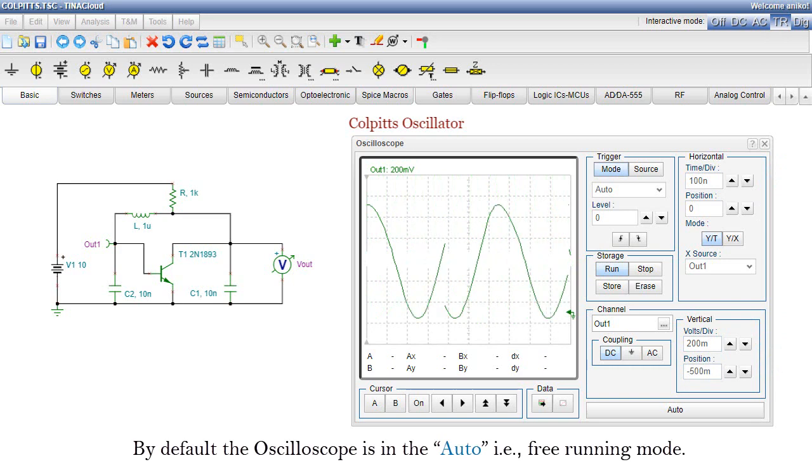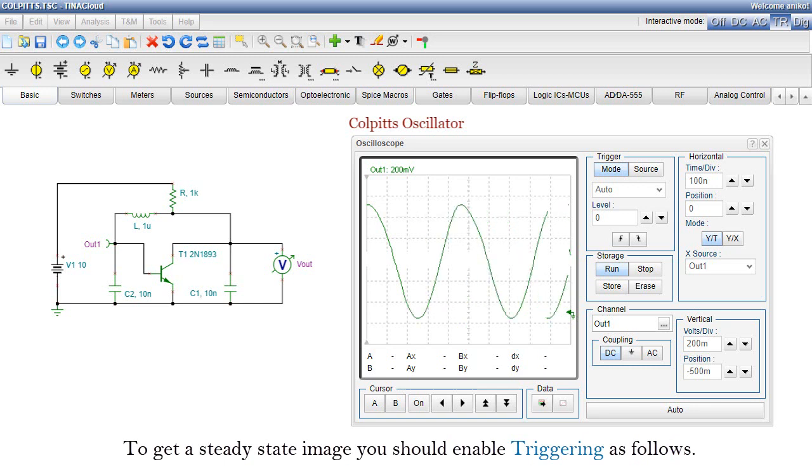By default, the oscilloscope is in the auto, i.e. free running mode. To get a steady state image, you should enable triggering as follows.